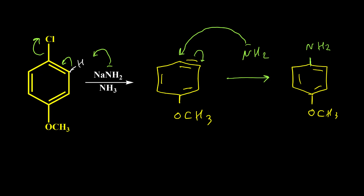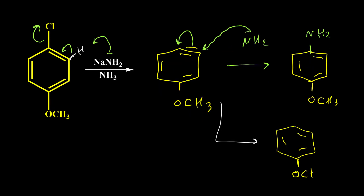In addition to that, we may have addition of NH2⁻ or ammonia to the other carbon, giving us another product. We have a para product and a meta product. Formation of these two products is another proof for formation of benzyne.